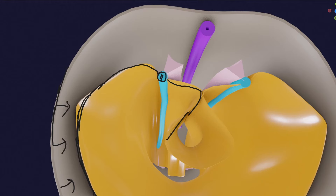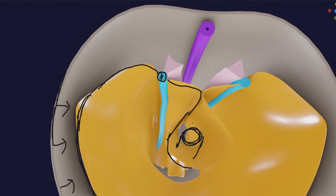The splanchnic mesoderm surrounds the endoderm forming the GI tube — it plasters the GI tube, surrounding the viscera. It forms the visceral layer of the peritoneum, while the somatic mesoderm forms the somatic — or parietal — layer of the peritoneum.